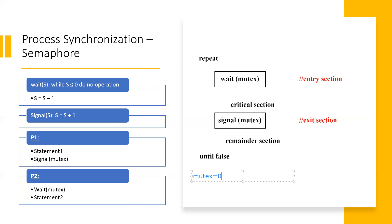The semaphore value is either zero or one — there is nothing in between. Zero means critical section is occupied. And when the process leaves the critical section using the signal function, the value becomes one again. And repeatedly the process will be done.